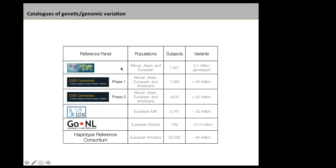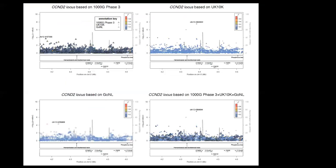Genotype imputation quality depends on your genotype array and the quality and density of the reference panel. The first reference panel was HapMap, then 1000 Genomes with over 15 to 40 million variants, then Phase 3 of 1000 Genomes, then UK10K with around 4,000 individuals and 42 million variants. The Haplotype Reference Consortium now aggregates most existing reference panels, and the more subjects you have for a given population, the better you can impute low-frequency variants.